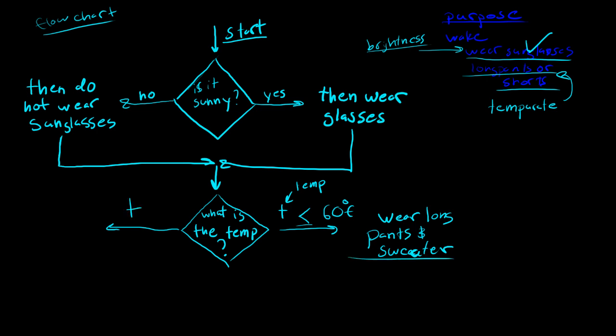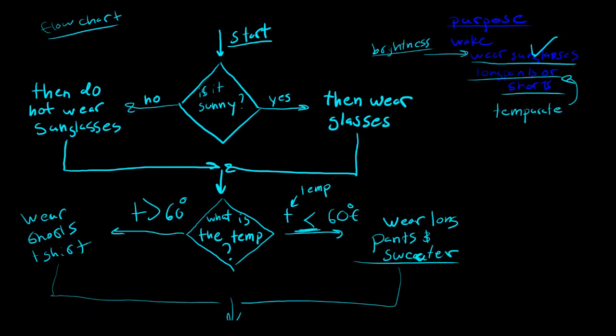And then on the other side, T is greater than 60. And we already took care of the equal, this equals case. So T is greater than 60, then wear shorts and a t-shirt. And that's basically the end of our algorithm. So we'll just come back to the center. And then we'll just exit.